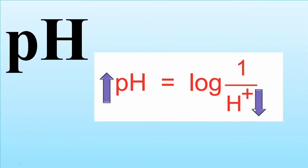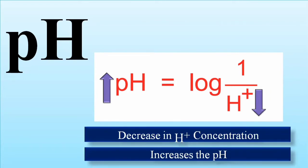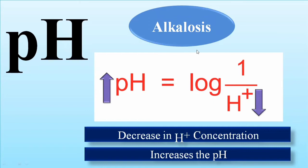If there is a severe decrease of hydrogen ions below the normal range, it causes the pH to increase above the normal range. Both hydrogen ion production and decrease must be in balance. A severe decrease in hydrogen ion concentration tends to cause an increase in pH, and this condition — where hydrogen ion concentration is low and pH is elevated above the normal range — is known as alkalosis.